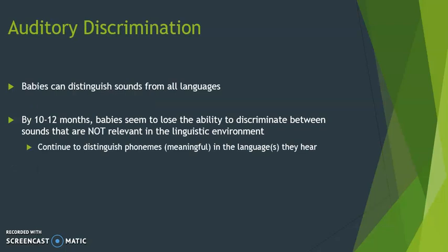Research has found that babies can distinguish sounds from all languages — they can tell the difference between the alveolar T versus the retroflex T, and all the sounds of all languages. But by the age of 10 to 12 months, babies seem to lose the ability or interest in discriminating between sounds that are not relevant in their particular linguistic environment. At first they can tell the difference, but if that distinction is not relevant in their language, they stop paying attention to it.